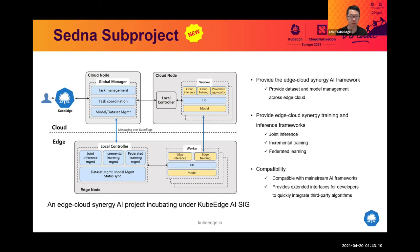The SEDNA framework will automatically hook, for example, the inference function to make it able to try again when local inference on the edge fails.